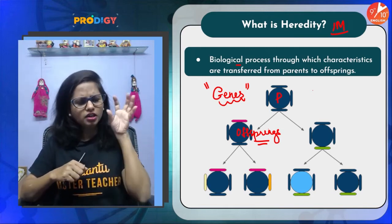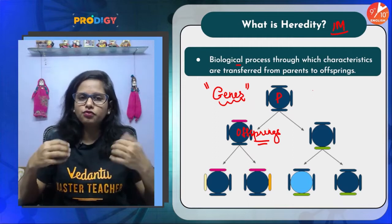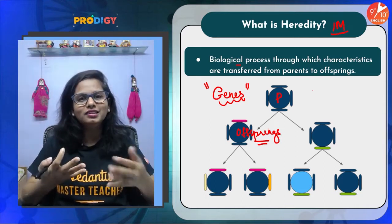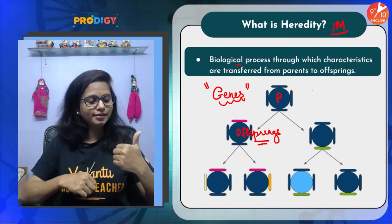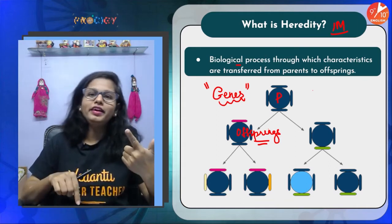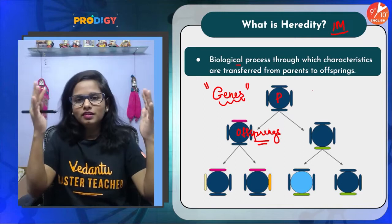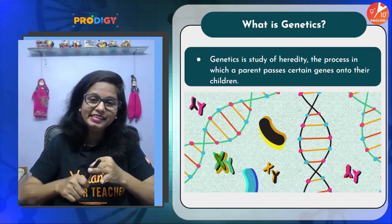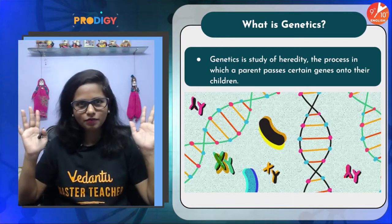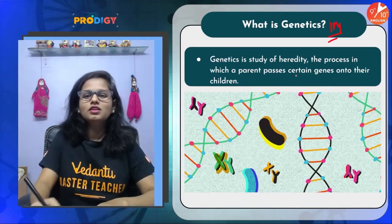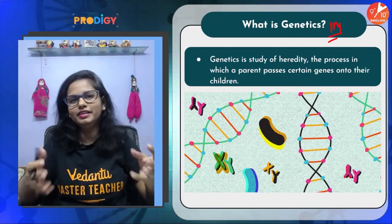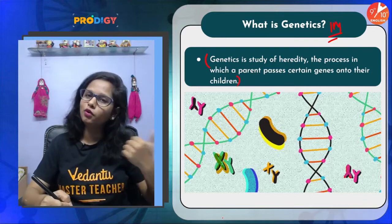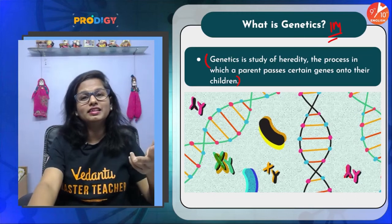We need to understand how genes are transmitted, why a particular trait is expressed, and why another is not — for example, why my complexion is not fair like my parents. The study of genes, the process of heredity, and why variations occur all come collectively under a branch called genetics. Genetics is a branch of biology in which we study genes, heredity, and variation.